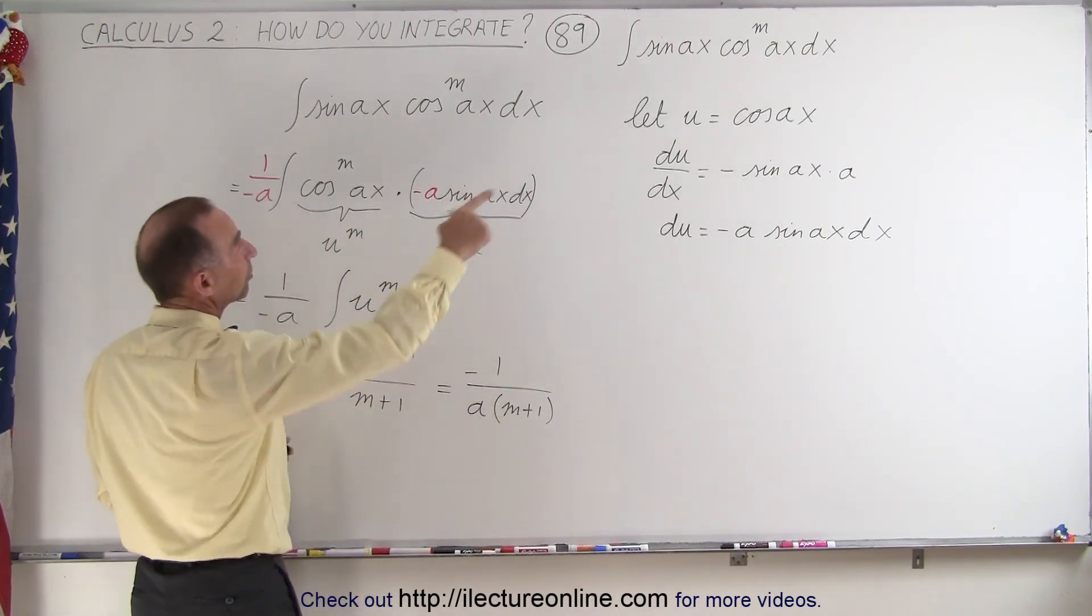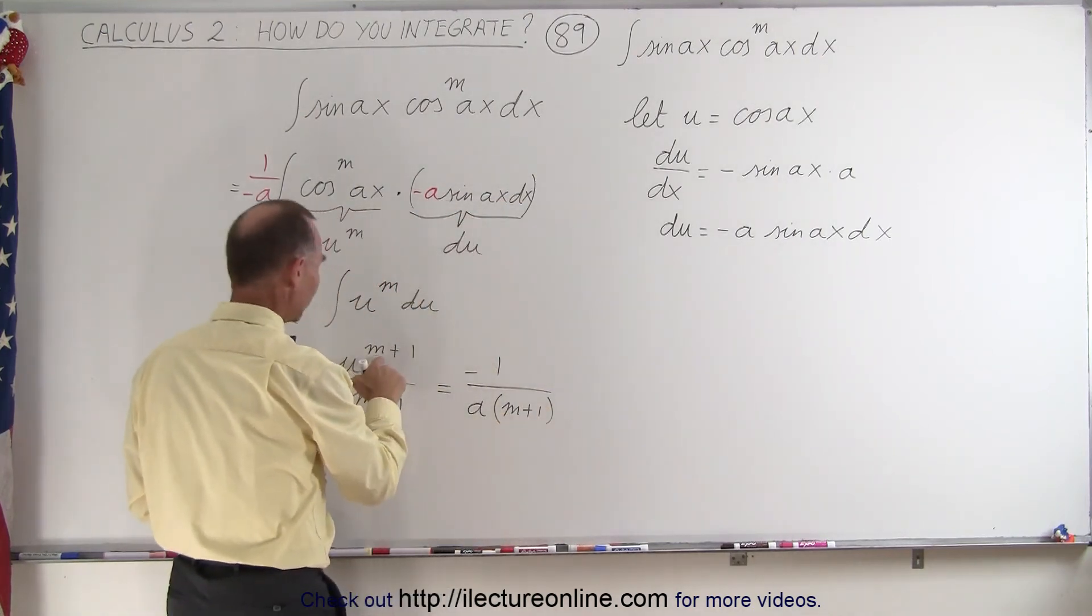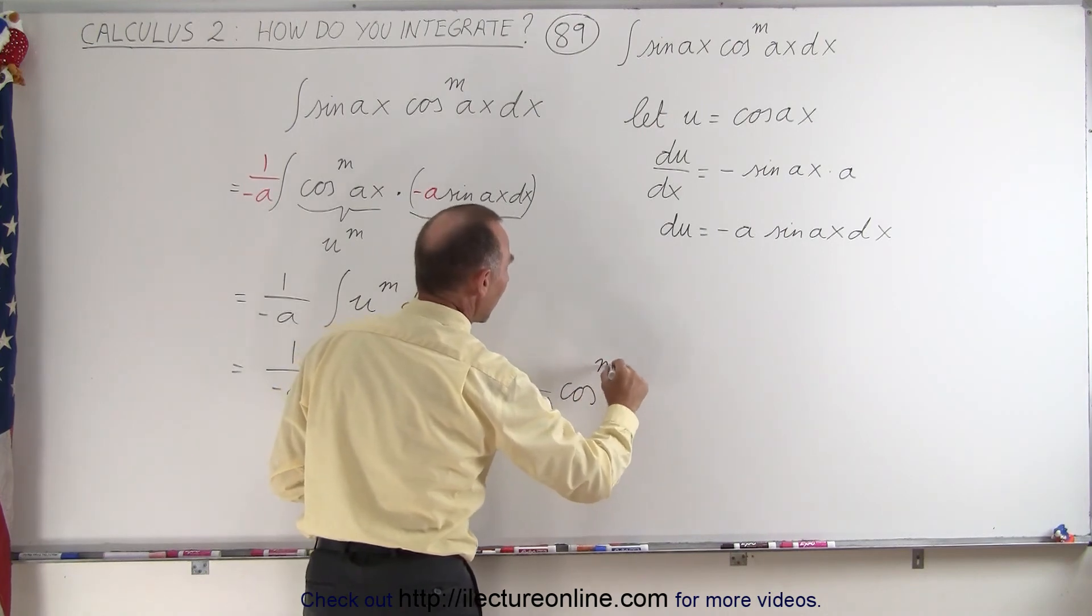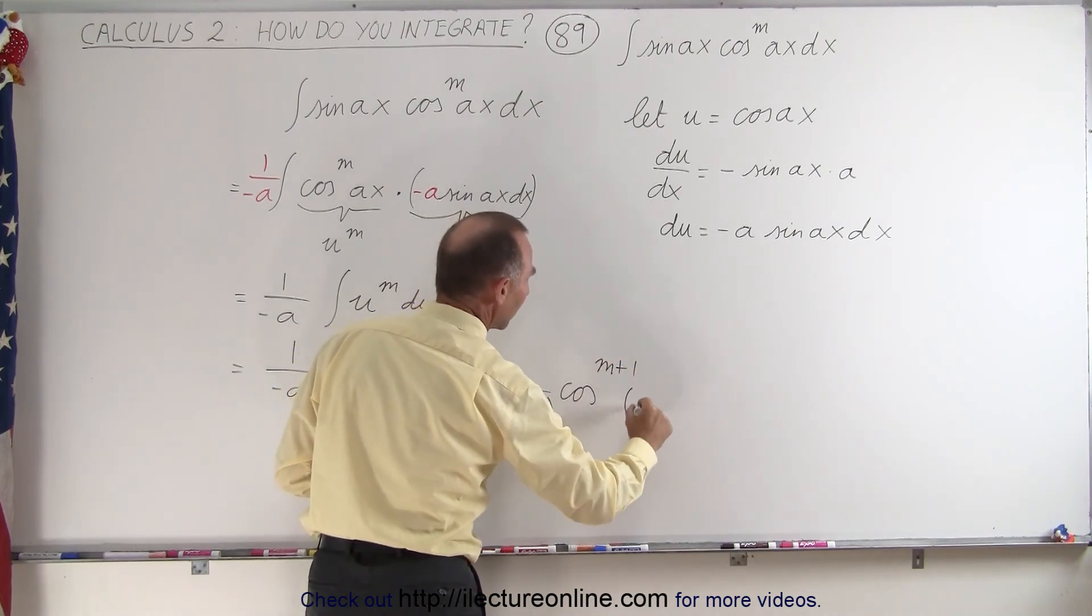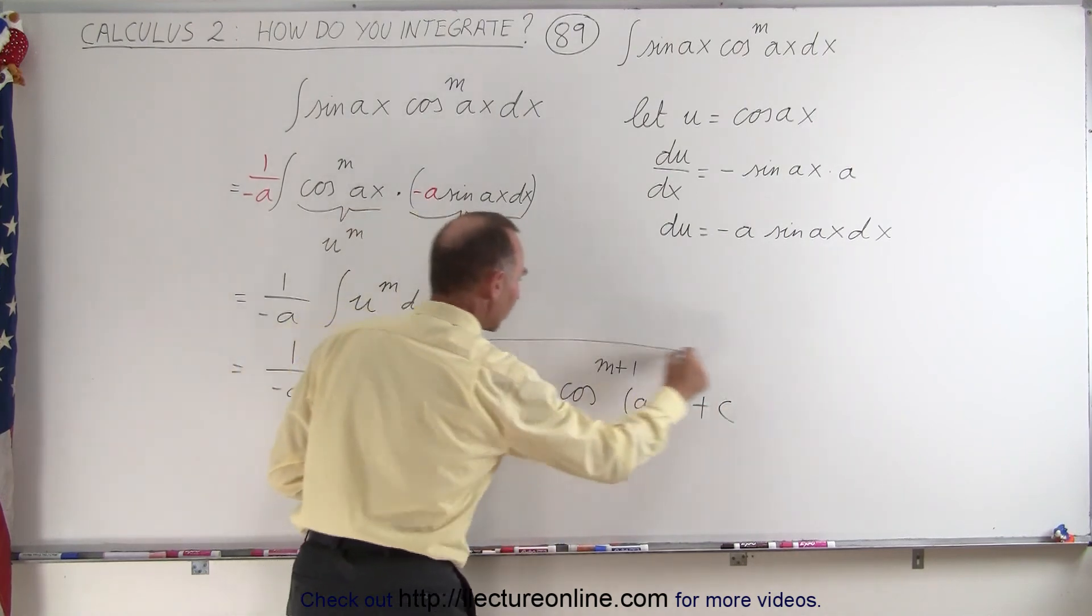And then u can now be re-substituted back to the cosine of Ax, and it's raised to the m plus 1 power. So this will be the cosine to the m plus 1 power of the angle Ax, like this, and also with a constant of integration.